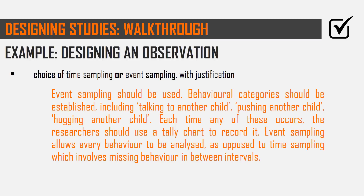I've gone with event sampling. What I'm doing is giving specific examples of behavioral categories that would go in my tally table — make sure they're operationalized and objective. For example, 'talking to another child' or 'pushing' or 'hugging.' You can't just have a vague category like 'being kind' or 'playing' — it needs to be more specific than that. I've justified it by saying we're not missing out on important behaviors.